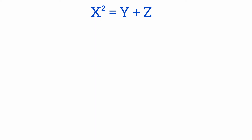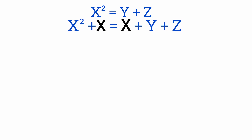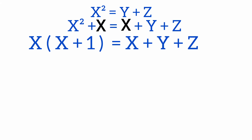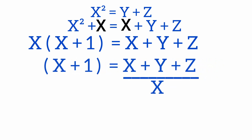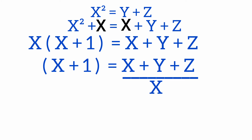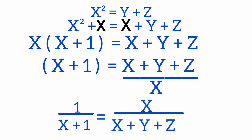First, consider x² = y + z. Adding x to both sides, on the left hand side we have x² + x, in which x is common. Taking x common, we have x(x+1) = x + y + z. Shifting x to the other side, x+1 = (x+y+z)/x. Taking the reciprocal, 1/(x+1) = x/(x+y+z). Let's consider this as equation 1.